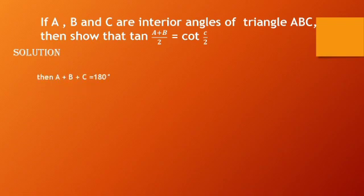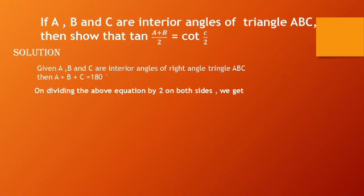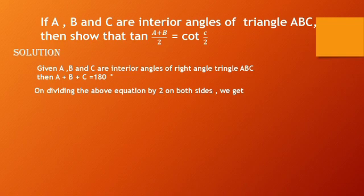Solution: given that a, b, and c are interior angles of triangle ABC, then a plus b plus c equals 180 degrees. On dividing the above equation by 2 on both sides, we get a/2 plus b/2 plus c/2 equal to 90 degrees.